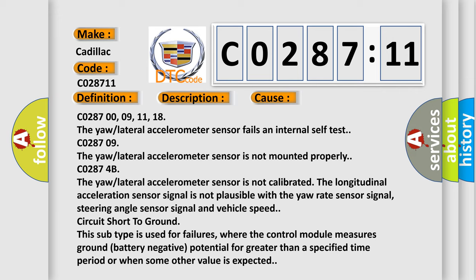Circuit short to ground: This subtype is used for failures where the control module measures ground battery negative potential for greater than a specified time period or when some other value is expected.